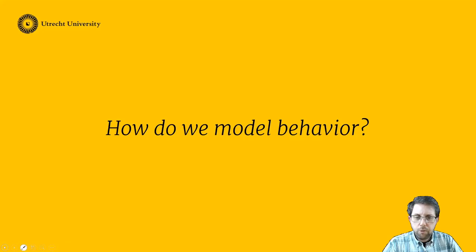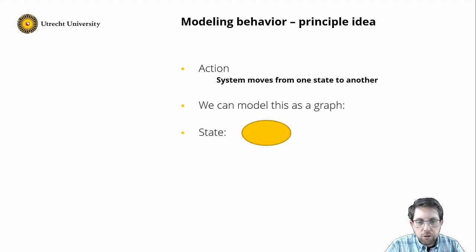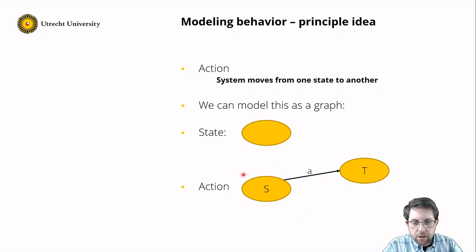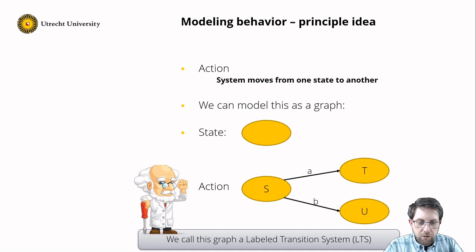That leaves us to the question: how do we model behavior? The principle idea is that if we have an action, it moves the system from one state to another, and we model this as a graph. States are represented by nodes and actions by edges. We have a state S with an action A moving to state T — so from S we can move to T via action A. If there is another action B from S moving to U, then in S we have a choice between A and B. This graph is what we refer to as a labeled transition system.